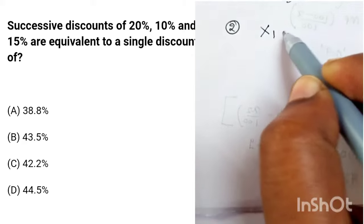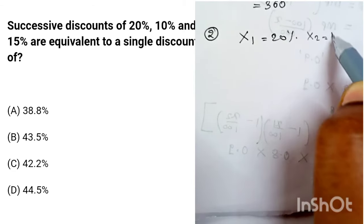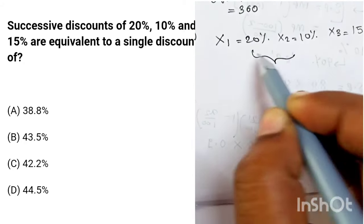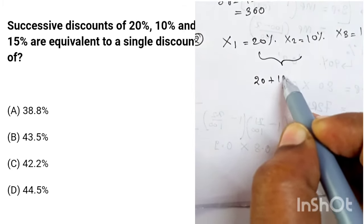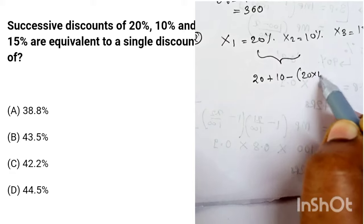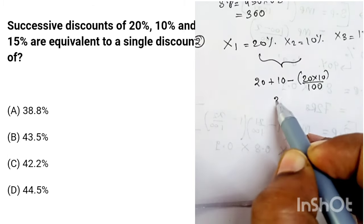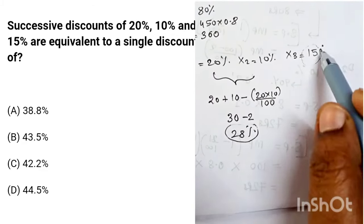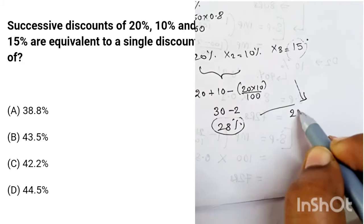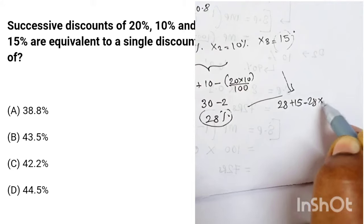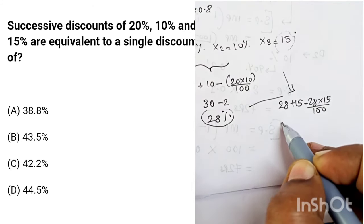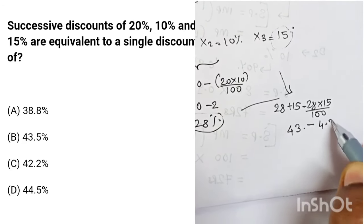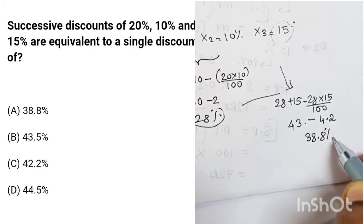In this question, first discount x1 = 20%, second discount = 10%, third discount = 15%. First find effective discount for x1 and x2: 20 + 10 − (20 × 10)/100 = 30 − 2 = 28%. Now treating 28% as x1 and 15% as x2: effective discount = 28 + 15 − (28 × 15)/100 = 43 − 420/100 = 43 − 4.2 = 38.8%.